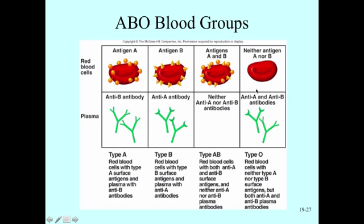A type O blood type has no antigens on the surface of their red blood cells — neither A nor B. Therefore, they are going to form antibodies against both A and B because those are foreign. They don't recognize them because they are not on their red blood cells, so they will form antibodies against both.